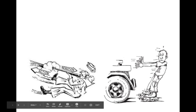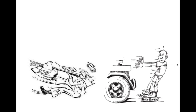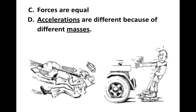Someone pushing against a car on rollerblades: the person pushes on the car, and the car pushes on the person — those are the action-reaction pairs. The forces in each scenario are equal: the gun on the bullet and the bullet on the gun are the same size of force. The force of the person pushing on the car is the same as the force of the car pushing on the person. Those forces are equal, but their accelerations are different because they have different masses.